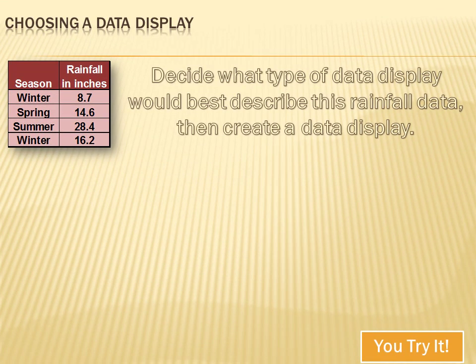Now we're going to let you try one. You get better at picking a good data display the more you do this — because there aren't simple rules, you develop the art and skill of figuring out how to display data in an unambiguous way that communicates well and doesn't deceive. Hit your pause button, try to find a way to display the data, try several options until you find something that works, and then hit forward to see my solution.